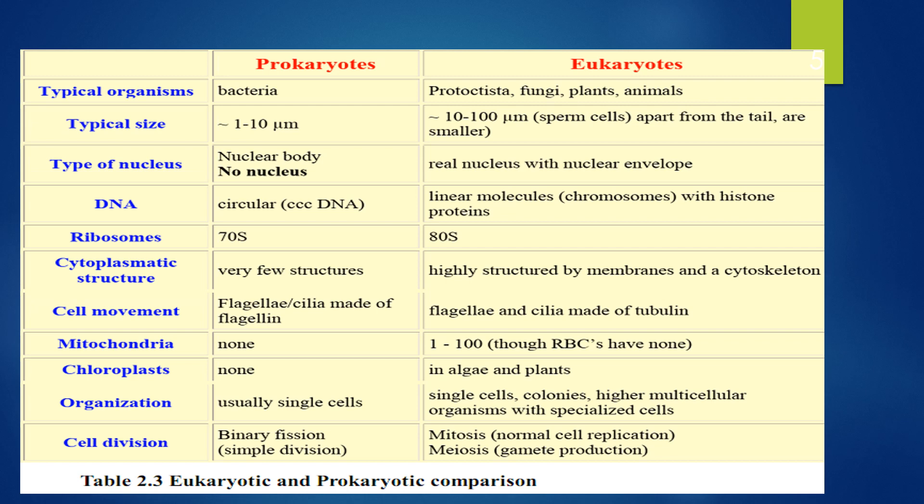When we come to DNA, the DNA of Prokaryotes is circular. In Eukaryotes, DNA is organized into linear molecules or chromosomes with histone proteins. Eukaryotes can have full-sized chromosomes. Eukaryotic cells are highly structured by the membrane.